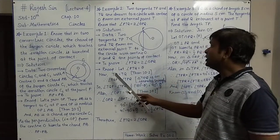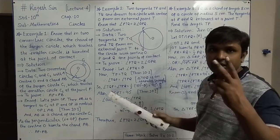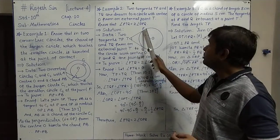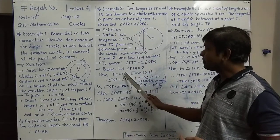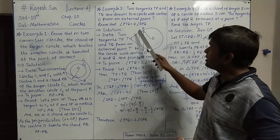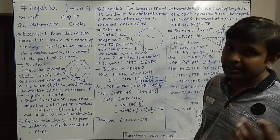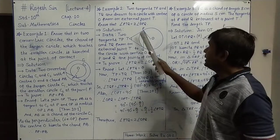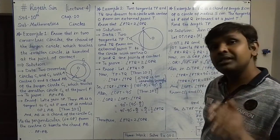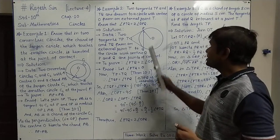From Theorem 10.2, two tangents drawn from an external point are equal, so TP equals TQ. Since two sides are equal, triangle PTQ is an isosceles triangle, and the angles opposite equal sides are also equal.